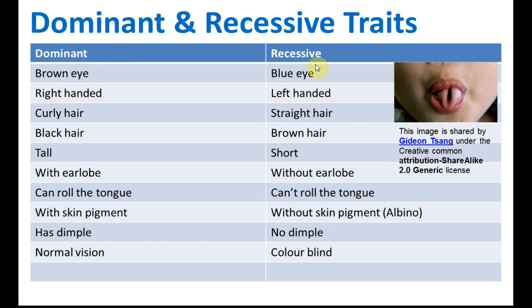Can roll the tongue is dominant. With skin pigments, dark skin is dominant; without skin pigments — for example, albinos, which we will discuss later — is recessive. Has dimples is dominant and no dimples is recessive. Normal vision is dominant and colorblind is recessive. You need to remember which one is dominant and which one is recessive.